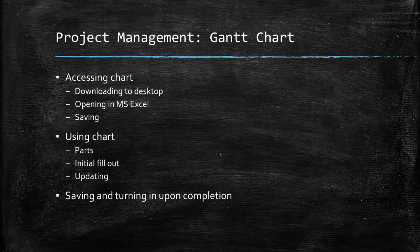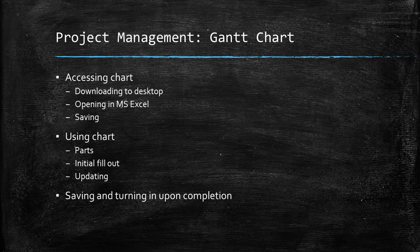Here are the parts of the video — you can jump to these sections as needed. We're going to start out by accessing the chart, getting it from the assignment page in Google Classroom, how to open it up using Microsoft Excel, and how to save things. Then we'll talk about the parts of the chart, how to fill it out initially, how to keep it updated, and then saving and turning it in upon completion at the end of the project.